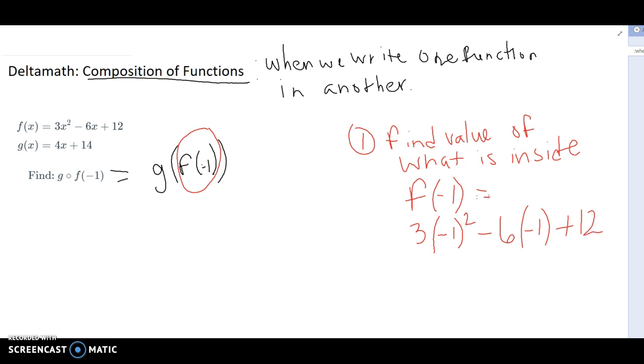So let's evaluate this. Order of operations tells me to do exponents first. So I'm going to do negative 1 squared first. So it's going to be 3 times 1. I'm going to go ahead and do this multiplication. A negative 6 times a negative 1 is going to give me a positive 6 plus 12. So here we got 3 times 1 is just 3 plus 6 plus 12. So that's going to give me 9 plus 12. That equals 21. So f of negative 1 equals 21.